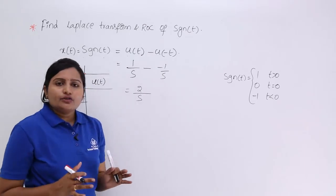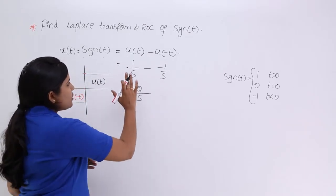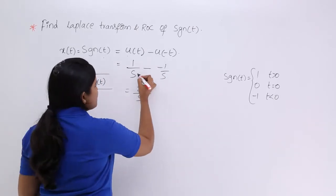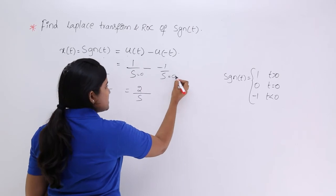Now we need to discuss about ROC. Coming to ROC concept, here there is no common ROC. Why? Because the pole is 0 and the pole is 0 here.